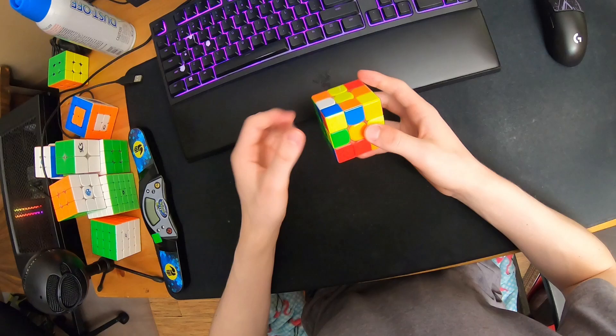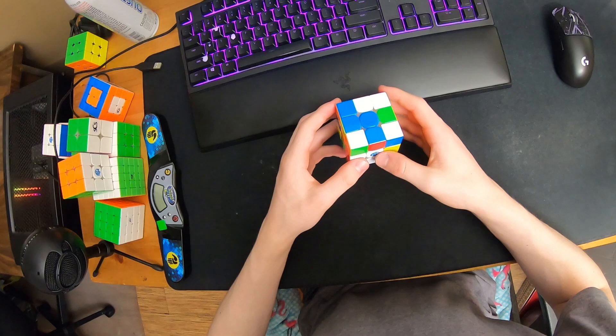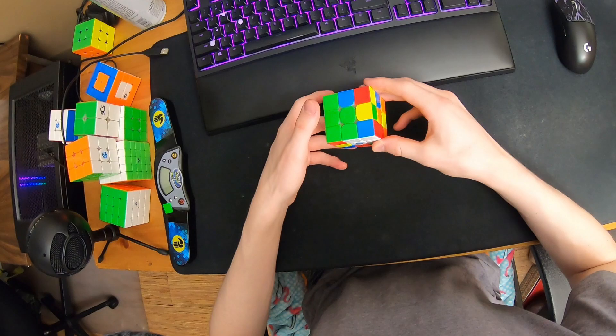It was a white X-cross again with this edge and this corner. I can do two moves to insert this and this, so I hold it like this, do like D prime and like a wide L.